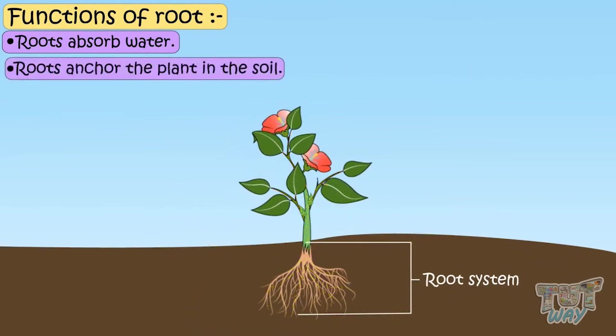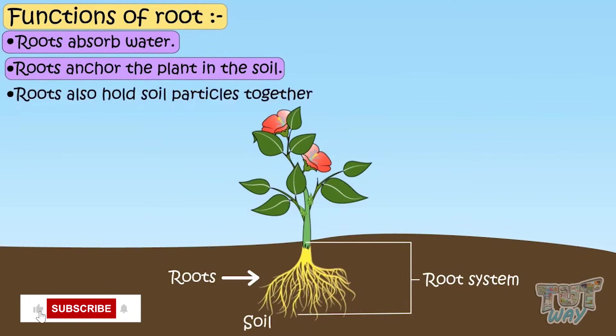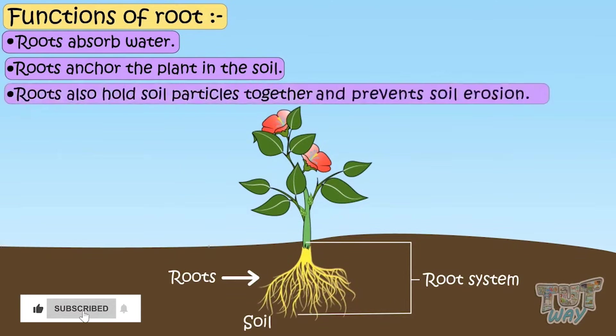Roots anchor the plant. That is, root fix the plants into the soil. Roots also hold soil particles together that prevents the soil from being washed away with rain or storm. So roots are the support system of the plant.